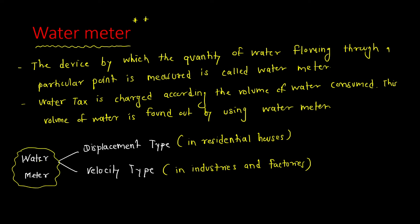So there are two types of water meter: displacement type and velocity type. Displacement type is used in most residential houses, while velocity type is used in industries and factories. At our homes, the displacement type water meter is used.